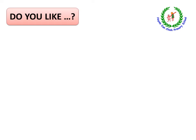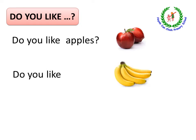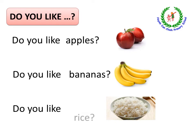Vậy, qua các video trên, khi chúng ta muốn hỏi ai đó có thích cái gì đó hay không, chúng ta sử dụng cấu trúc 'Do you like?' Now, let's look at the screen. There are some examples for you. Number one: 'Do you like apples?' — Bạn có thích những quả táo không? Number two: 'Do you like bananas?' — Bạn có thích chuối không? Number three: 'Do you like rice?' — Bạn có thích cơm không?